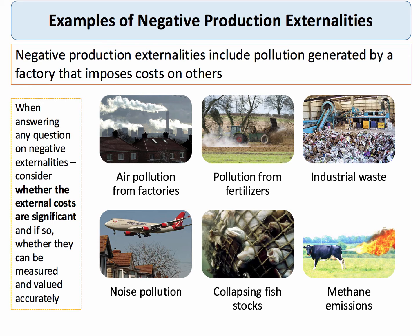Here are some examples on the production side. Pollution of the air from factories; pollution created from the intensive use of fertilisers in commercial farming; the externalities associated with the creation, handling, and disposal of industrial waste; noise pollution from heavy industry and transport, including people living close to airports; and the industrial farming of fish in the ocean beds and the damage to the marine ecosystem.